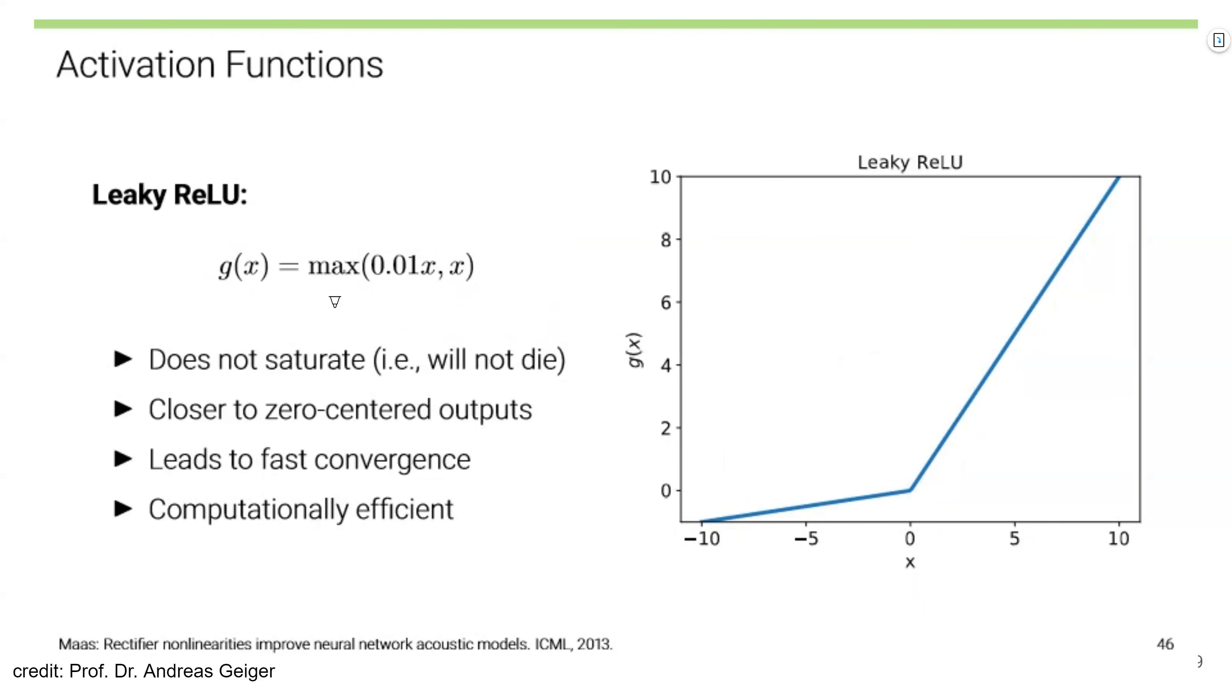And to solve this issue, we sometimes use leaky ReLU. It looks like this. So this part, it is not dead. It does not saturate, and it will not die. And it is closer to zero centered outputs. And it is also computationally very efficient. These two operations are very cheap. And because all areas have certain slopes, it leads to fast convergence.